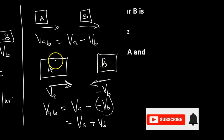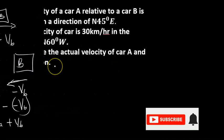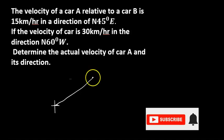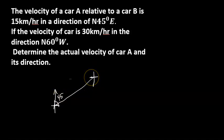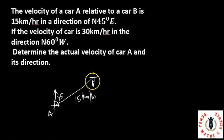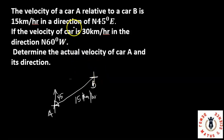The question says: the velocity of car A relative to car B, V_AB, is 15 kilometers per hour in the direction of 45 degrees north-east. Car A is at one point and its velocity relative to car B is at 45 degrees to the north. Car B is at another point, and V_AB is 15 km/h. The velocity of car B is 30 kilometers per hour in the direction north-east.